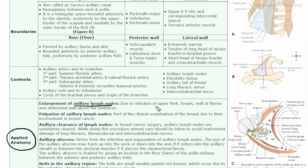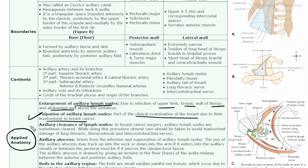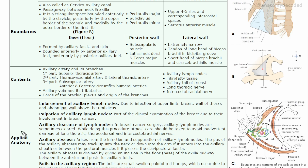In applied anatomy, the axilla contains axillary lymph nodes. Infection in the upper limb, breast, thorax, or upper abdominal wall causes these lymph nodes to enlarge, as lymphatic drainage from these regions first passes through them. Palpation of axillary lymph nodes is an important part of clinical examination of the breast due to their involvement in breast cancer.